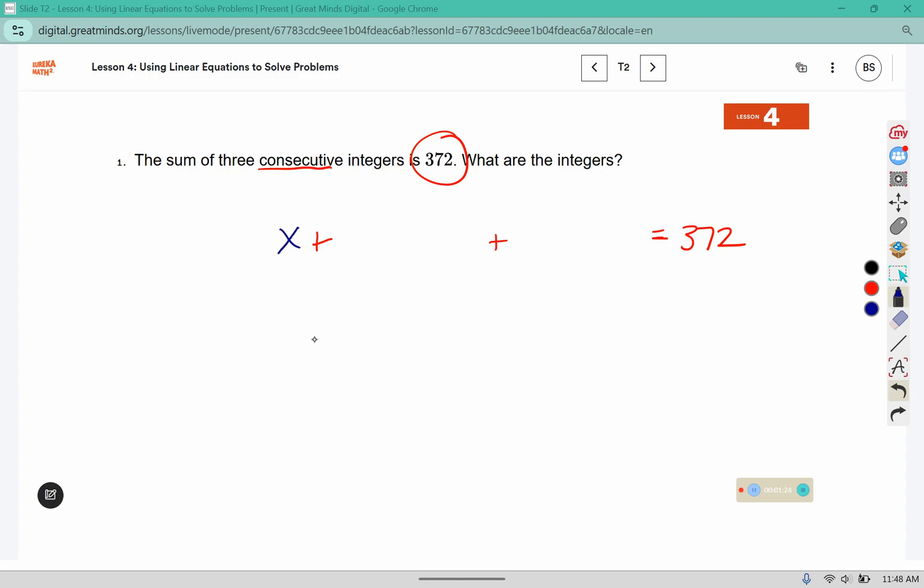So I'm going to separate it out here. So I have my first number, then in that list like five, six, seven, they get bigger by one each time. So we're going to add an extra one, and then from there we add two to get to the next one. Now we can combine our like terms. I have one, two, three x pieces. I have a one and a two which add together to make three, and all of this equals 372.